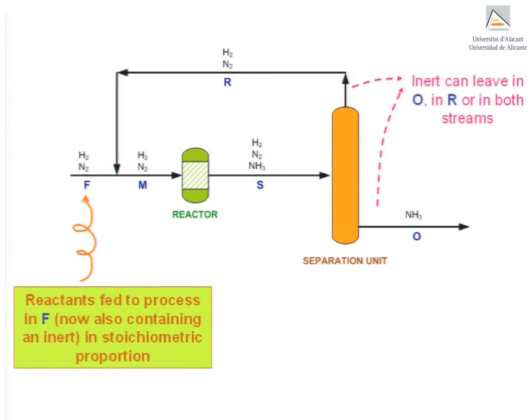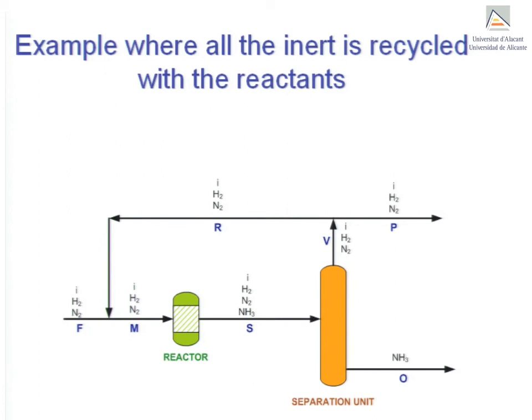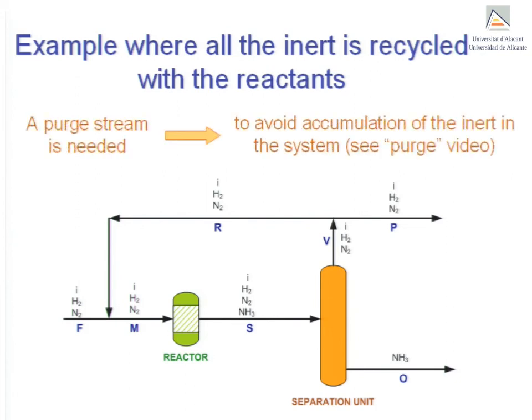Let's consider the situation where all of the inert ends up in stream R. If we want to maintain a steady state regime, it will be necessary to force the inert out of the system, otherwise it will accumulate. To force the inert out of the system, we will have to use a purge stream. You are advised to see the video in this series dealing with the purge concept.